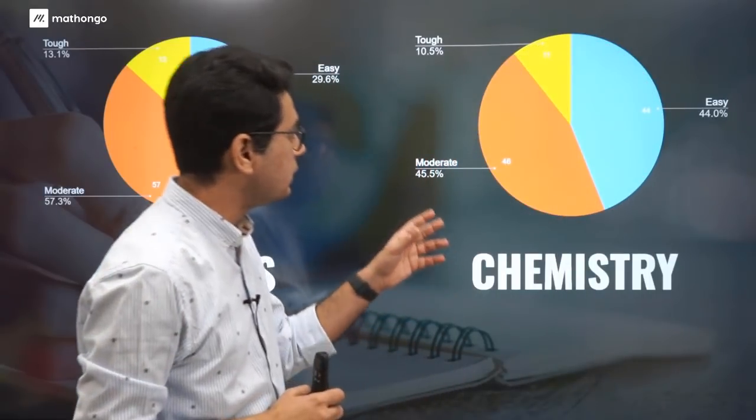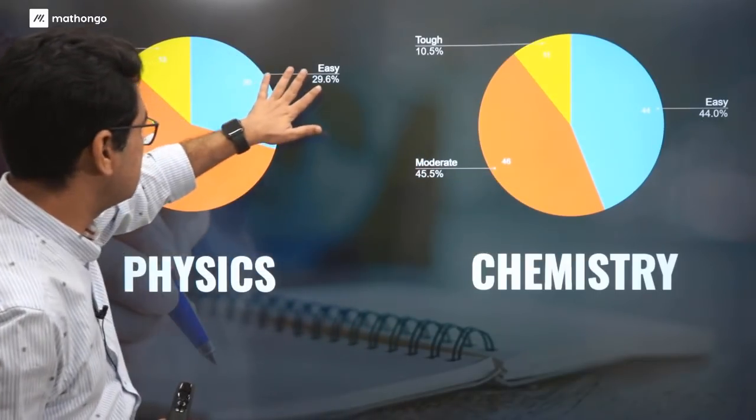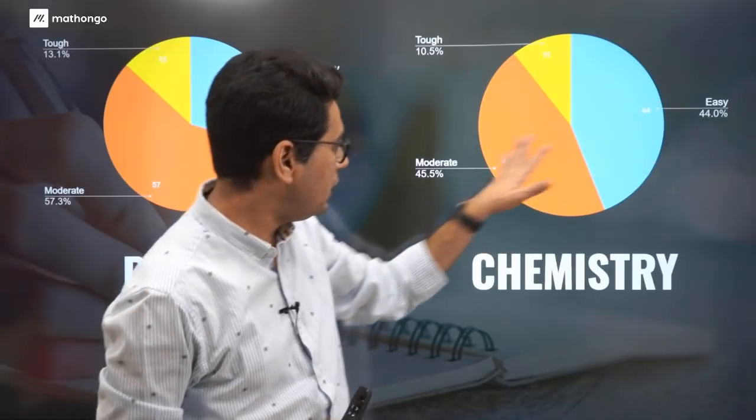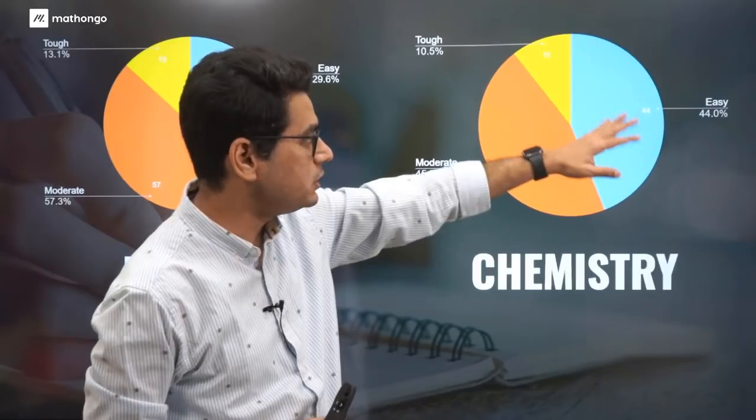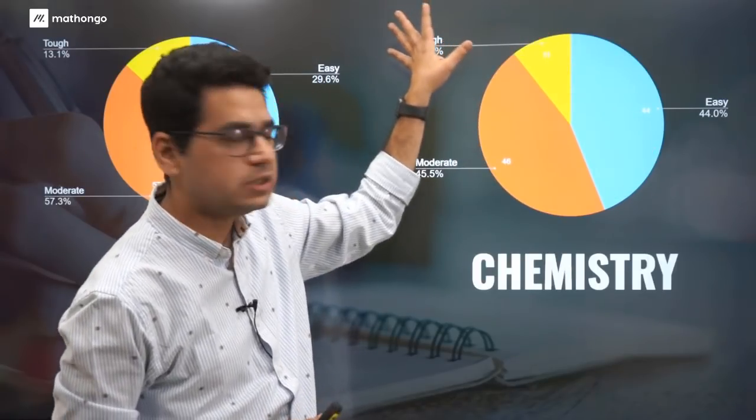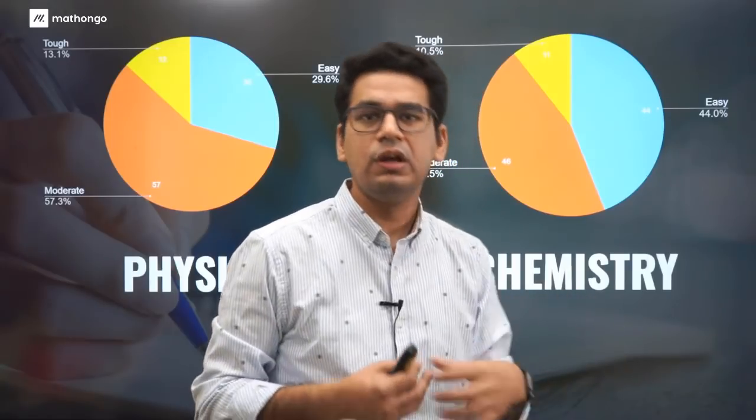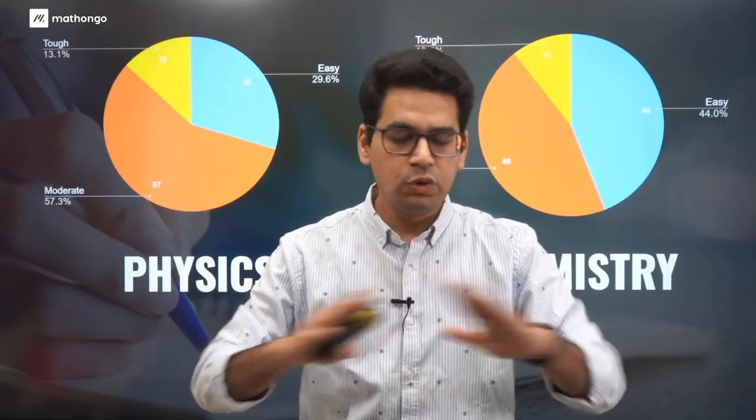If we talk about chemistry per se, easy increased to 44%, whereas physics was 30% easy and 57% moderate. Chemistry has 44% easy and 46% moderate. That includes 90%, so 90% is easy and moderate, whereas 10% is only the tough part. You can understand very well this becomes very scoring. If you have done really good basics of JEE Main for chemistry, you will blow the paper.